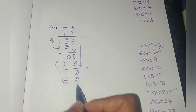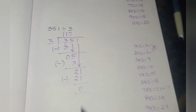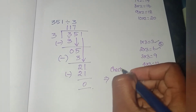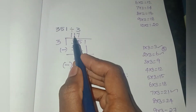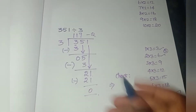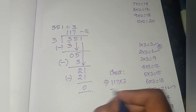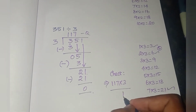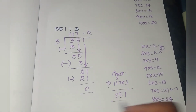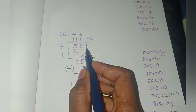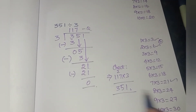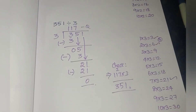Next, the next step: 21 minus 21 equals 0. So our answer is correct — if we multiply the divisor and quotient we get the dividend. Next video we will see the next types. Thank you.